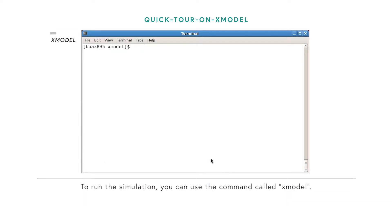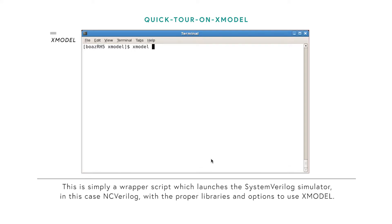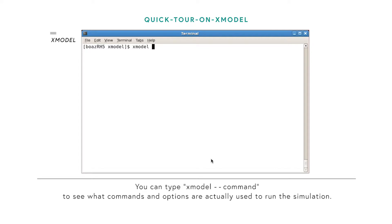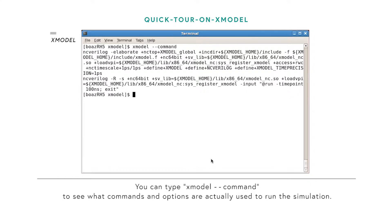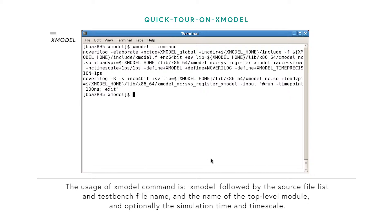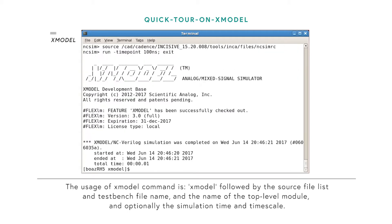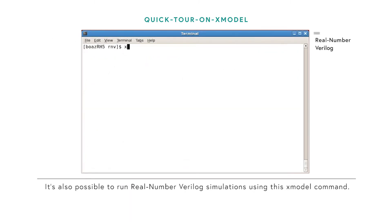To run the simulation, you can use a command called X-Model. This is simply a wrapper script which launches the SystemVerilog simulator, in this case NC Verilog, with the proper libraries and options to use X-Model. You can type X-Model dash dash command to see what commands and options are actually used. The usage is: X-Model followed by the source file list, test bench file name, name of the top-level module, and optionally the simulation time and time scale. It is also possible to run Real Number Verilog simulation using this X-Model command.